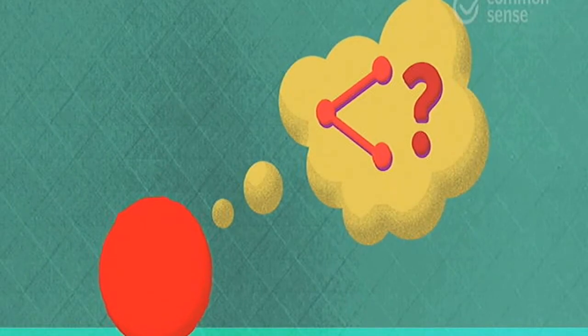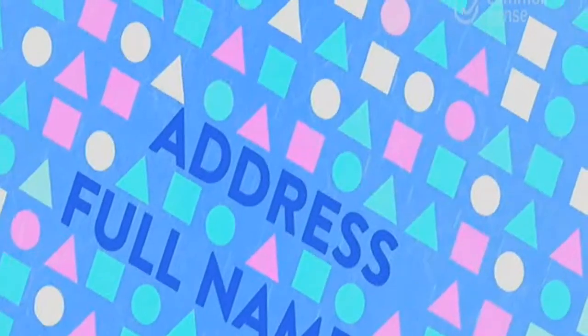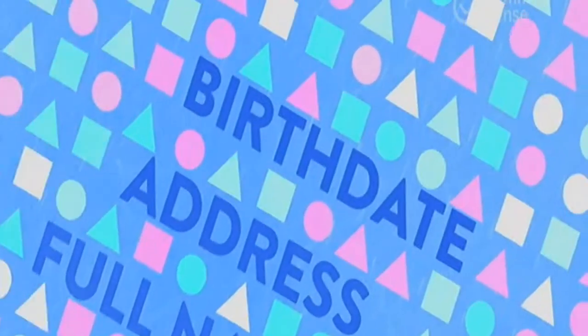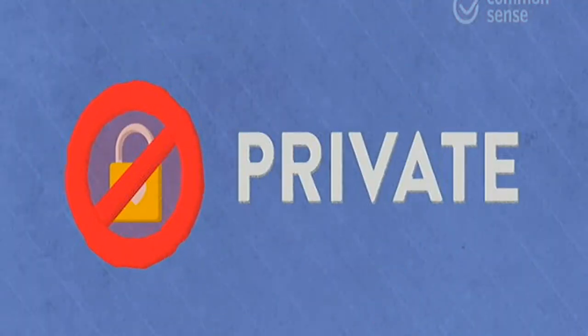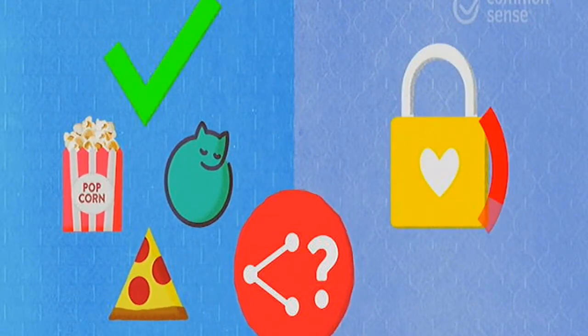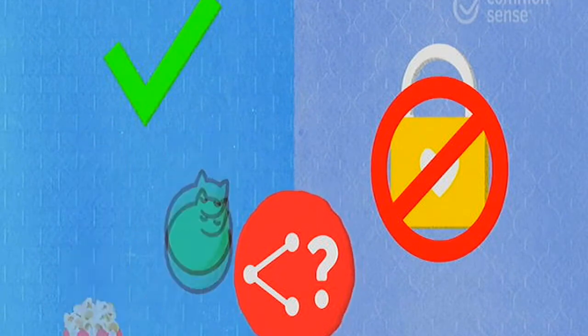Before you share, however, it's important to pause and think. Some information about you, like your full name, your address, or your date of birth, can be used to identify you individually. This information is private and should not be shared online unless you get permission first from an adult you trust. So when it comes to sharing about you, personal info can be okay. But private info? No way. Think before you share.